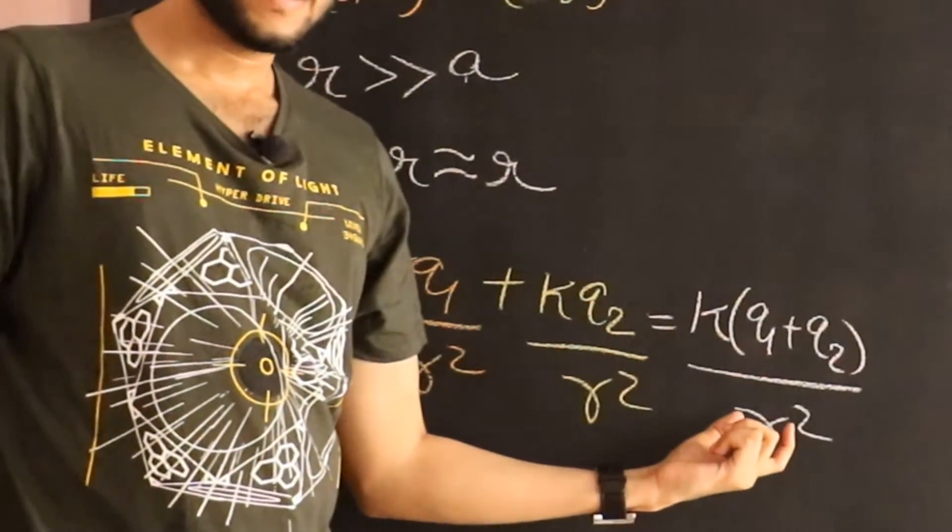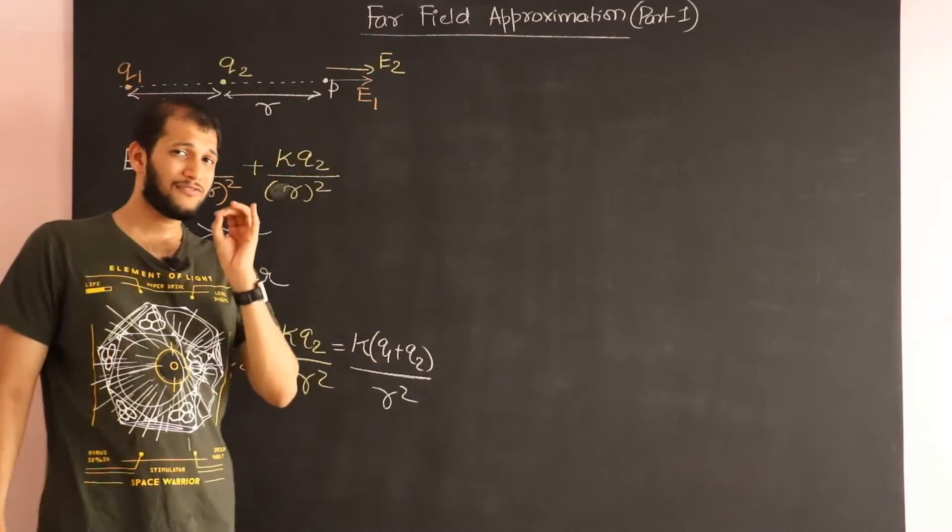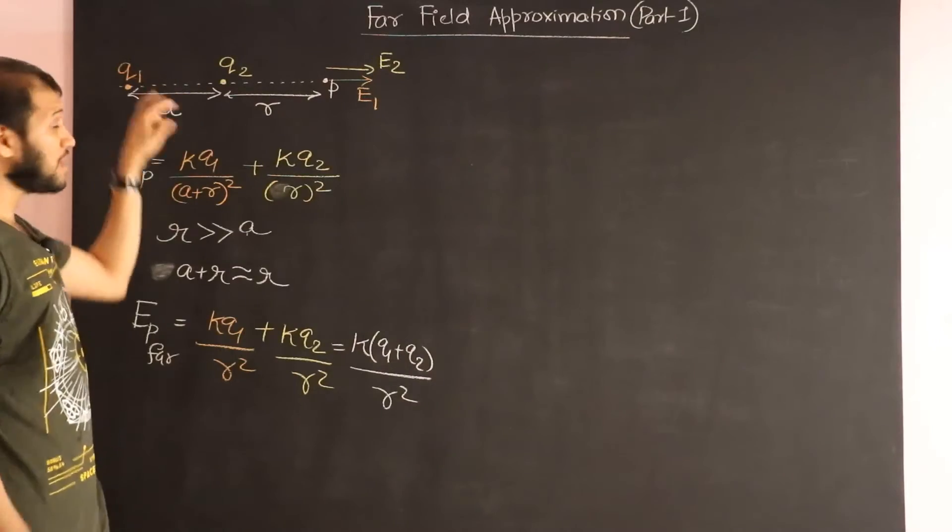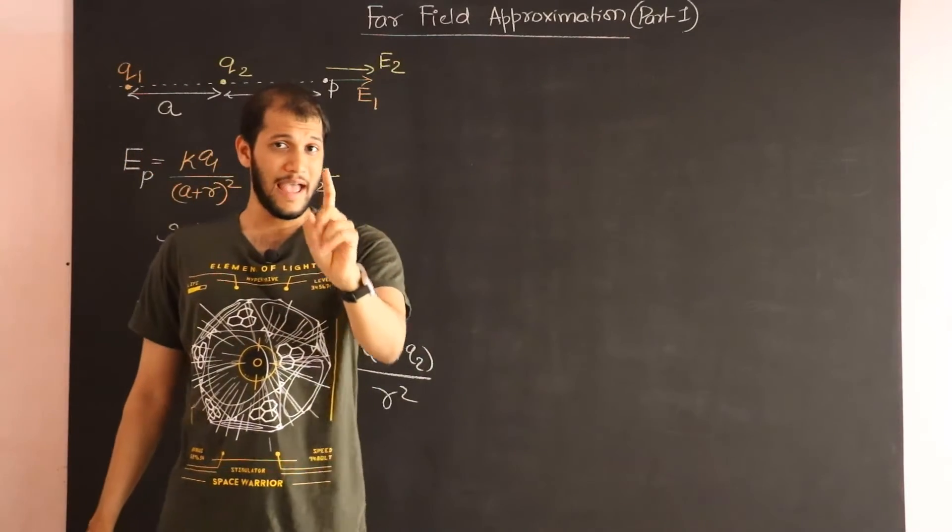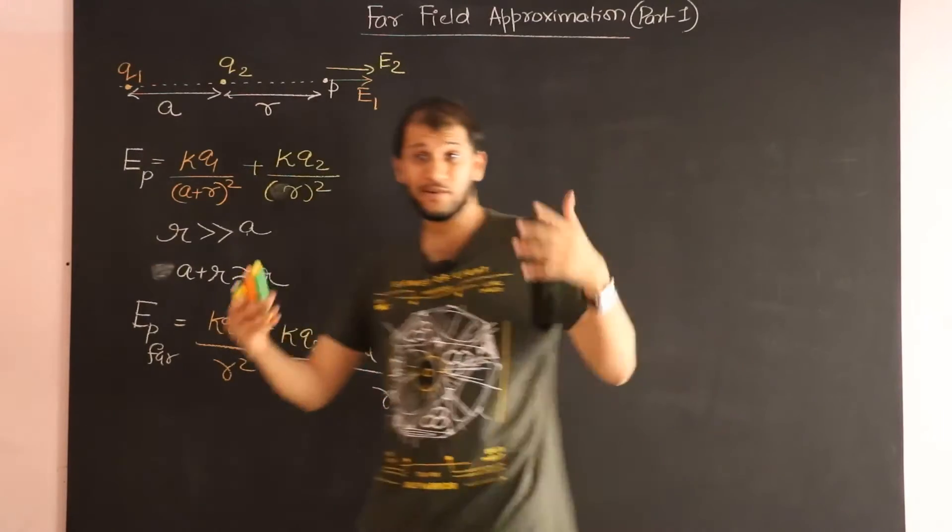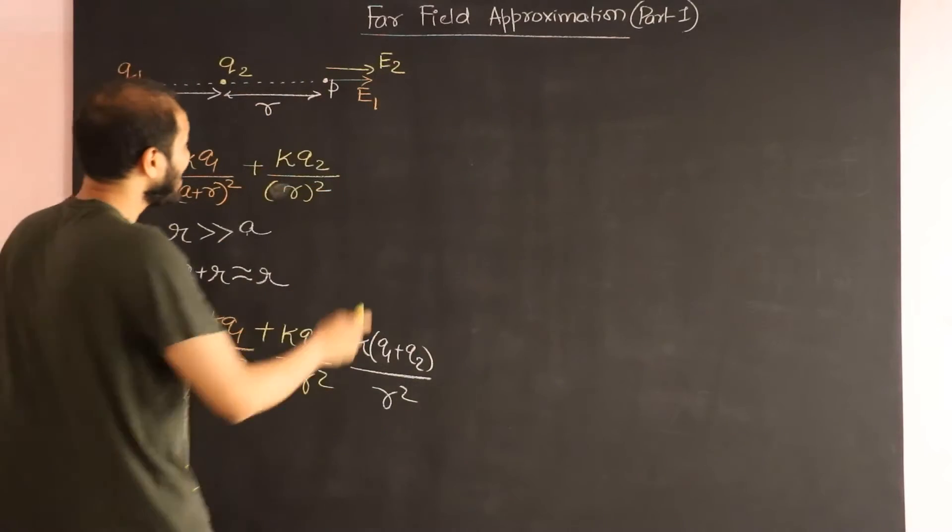What this is telling you is that when you go far away the electric field would have the same form as if there weren't two charges separated by a distance a but they were just one charge having the total charge Q1+Q2.